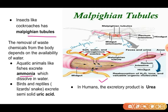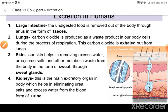What waste do different animals remove? Aquatic animals like fishes remove ammonia as a waste, and birds and reptiles remove uric acid as a waste. In humans or mammals, urea is removed as an excretory product. Ammonia, uric acid, and urea are nitrogenous wastes. If these nitrogenous wastes accumulate in our body they could be very harmful and toxic, so they need to be removed from time to time.